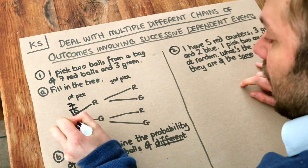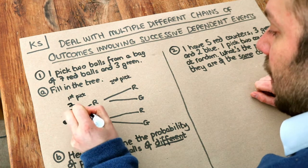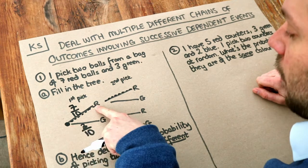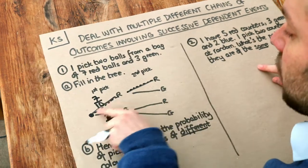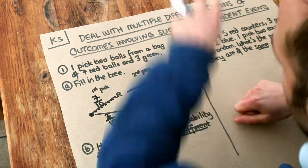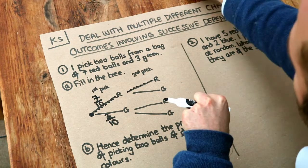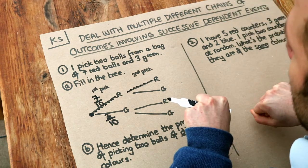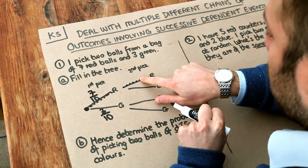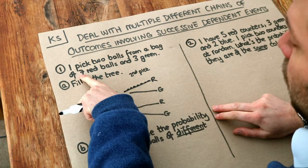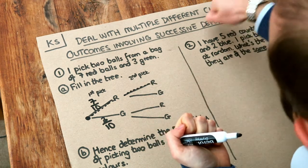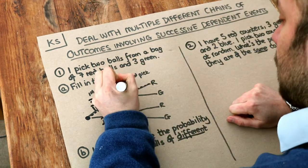A probability tree is great at representing a sequence of outcomes. For example, a path from left to right through the tree means you're picking red on the first pick and then red on the second pick. Notice I'm getting two balls from the bag, so I'm not putting the first ball back. If I picked red on my first pick, I've only got six red balls left and three are still green. So out of the nine balls left in the bag, six of them are red — that's six ninths.